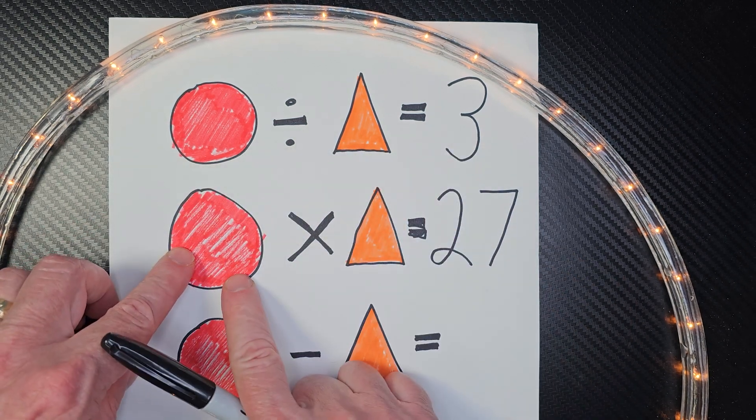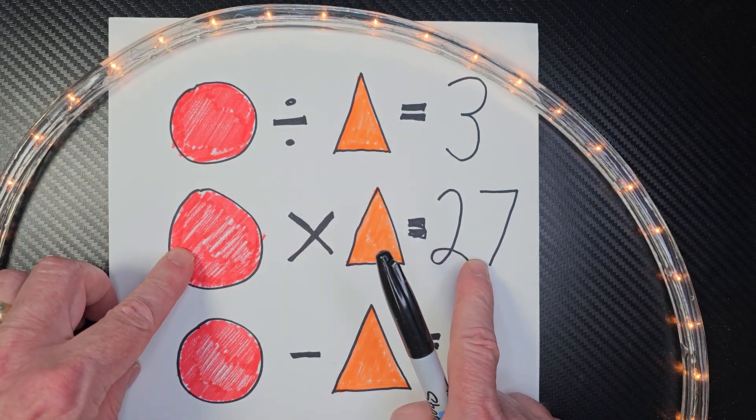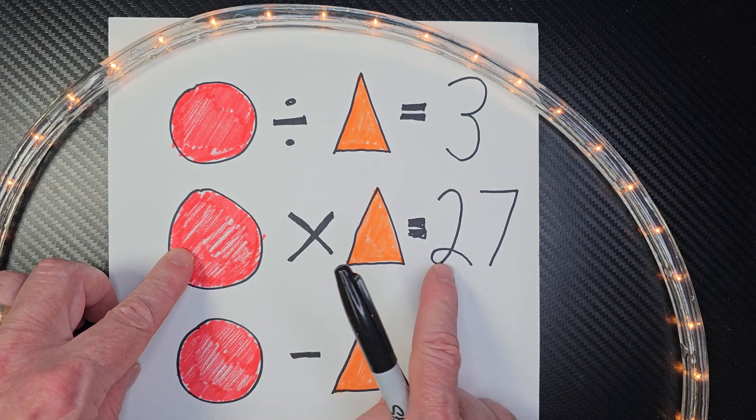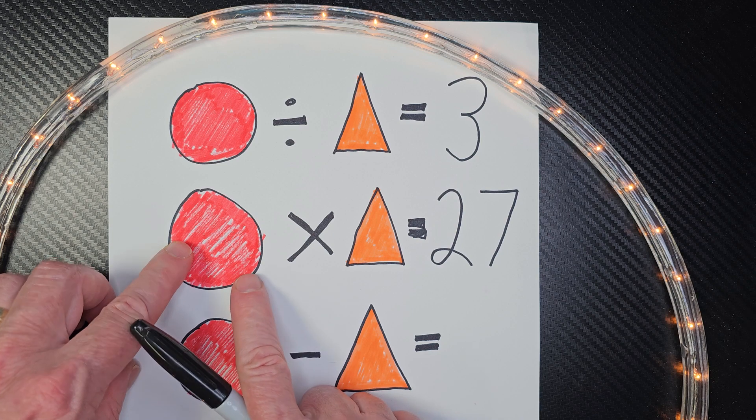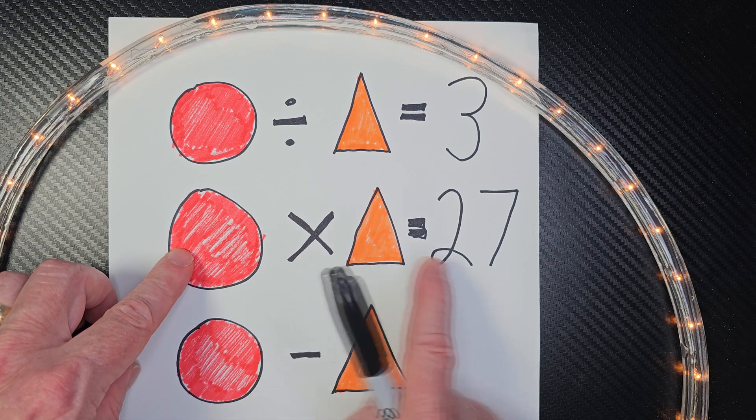But if I had 3 times 1, nope, that's not going to work. So what two numbers equal 27? The only numbers I can think of would be 3 times 9 or 9 times 3.